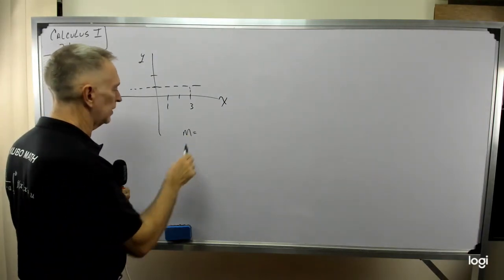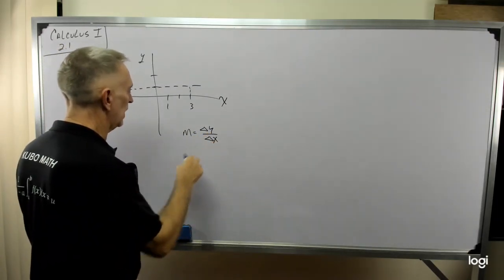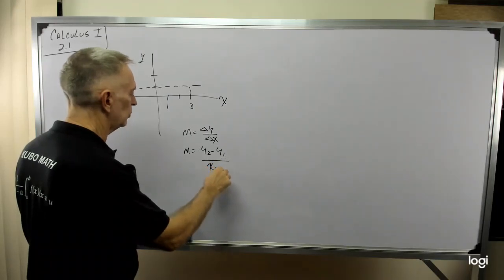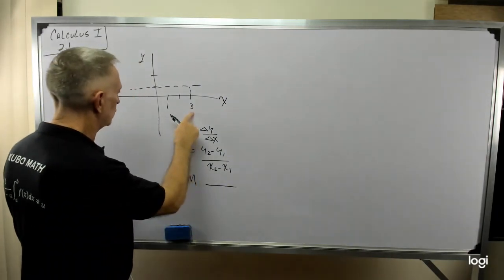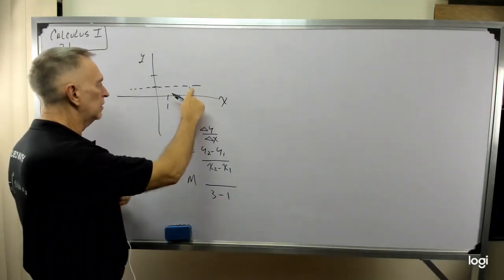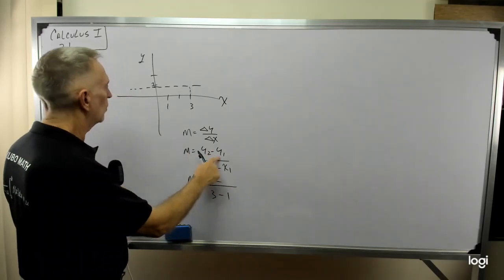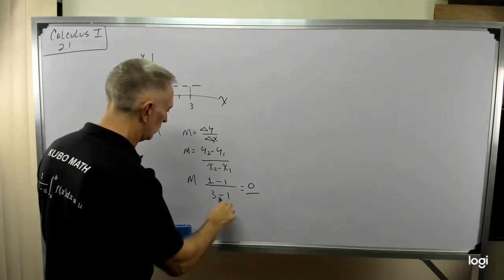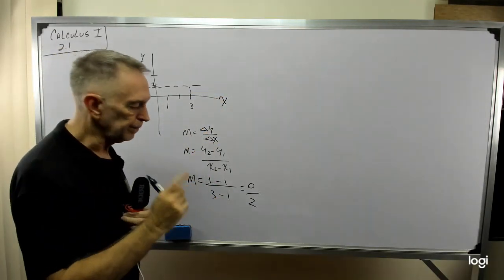What is the slope of something you learned in Algebra 1 or Algebra 2? It's the change in y over the change in x. Well, that equals y sub 2 minus y sub 1 over x sub 2 minus x sub 1. So M in this case, we have x sub 2 is 3, x sub 1 is 1. So what is y at this value of x? Well, it's 1. It's 1 minus y sub 1, which is 1 also. So 1 minus 1 is 0, 3 minus 1 is 2. So my slope of that constant function is 0. Keep that in mind.